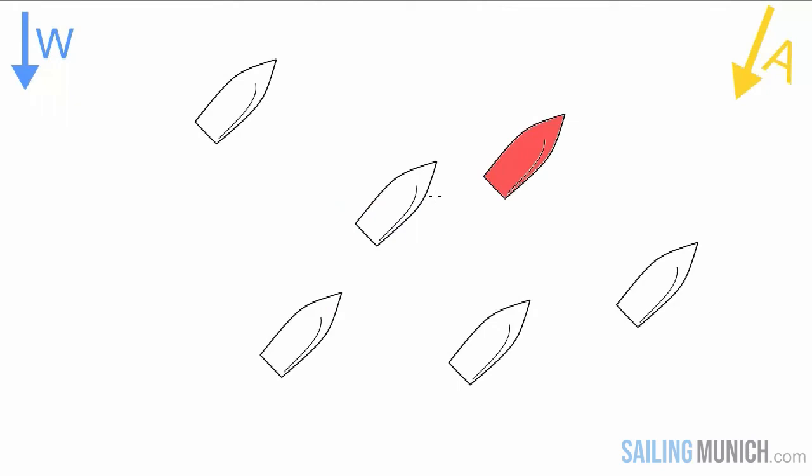Now let's look at an example. Which of the boats is getting dirty air from the red boat? Let's start at the top. This boat here is looking good. She is well to windward of the red boat, and so she is not affected by the disturbed air around the red boat.